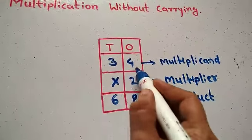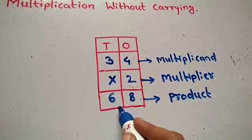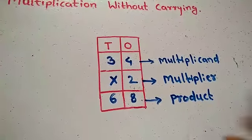Students, 34 is the multiplicand and 2 is the multiplier. And finally, 68 is the product.